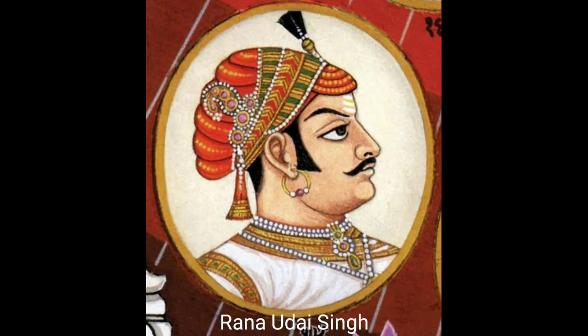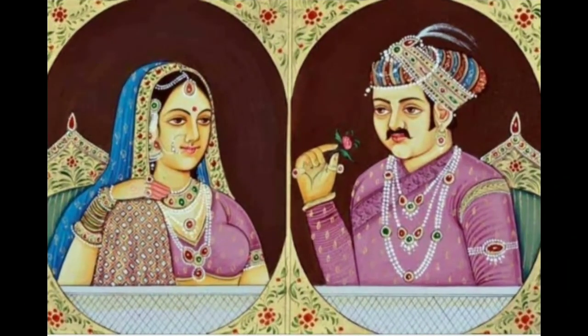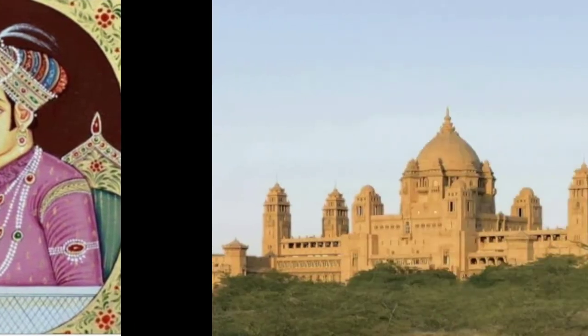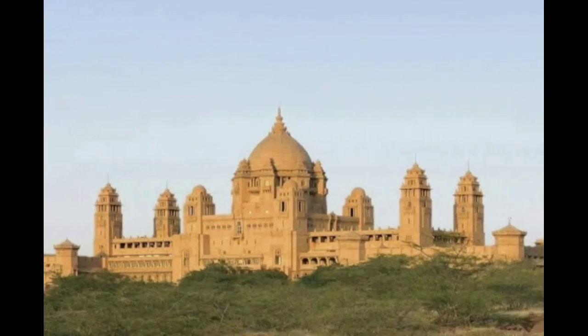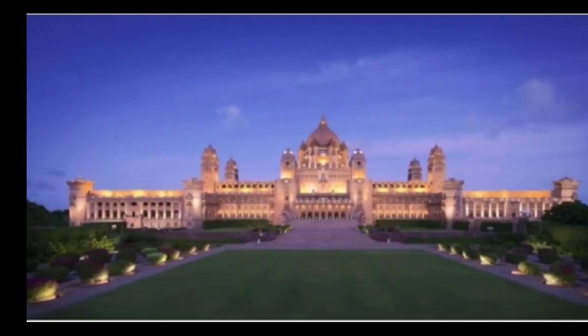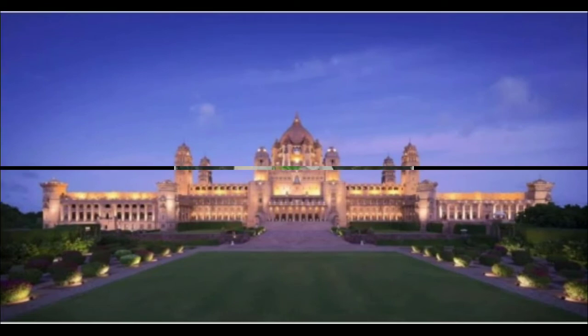For two centuries, the 15th and 16th, Jodhpur followed the Jain style of Western Indian painting, as patrons were mostly Jain merchants. Mughal influence started in Jodhpur painting towards the end of the 16th century when Rana Udai Singh gave his daughter in marriage to Akbar.